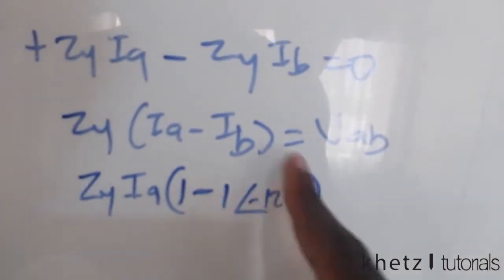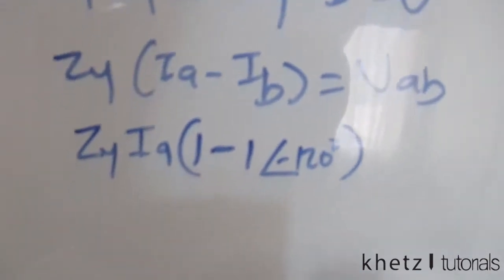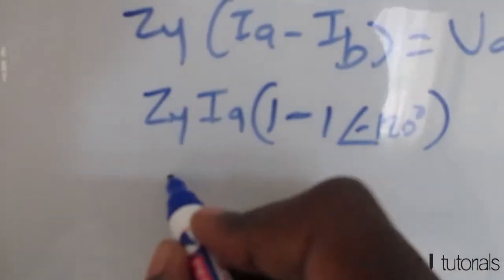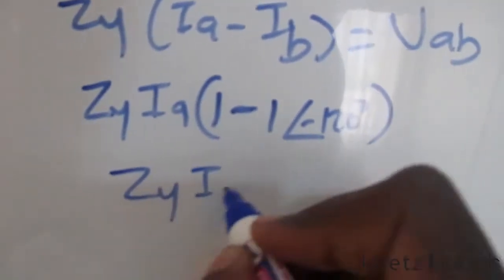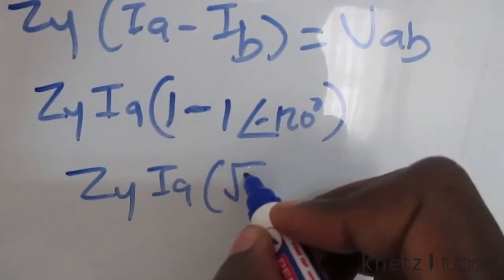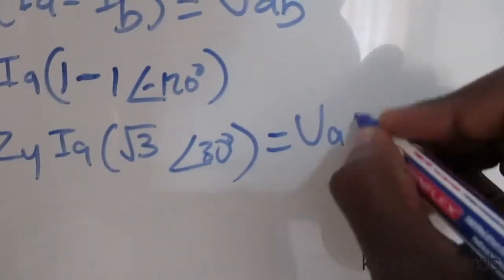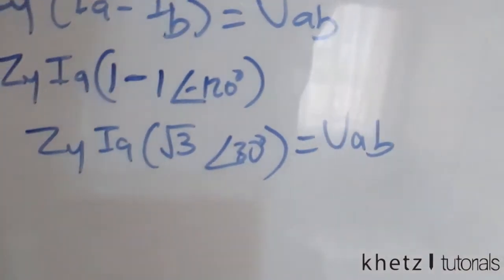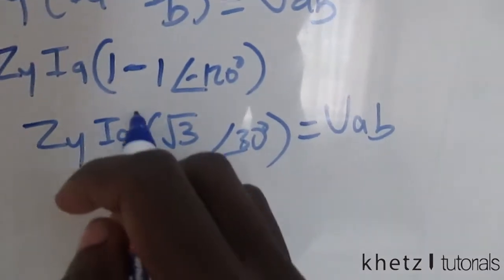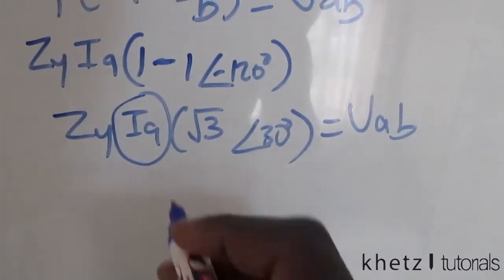Now converting this into polar form, which is 1 minus that, you're going to have something like this: √3∠30°. That equals VAB.